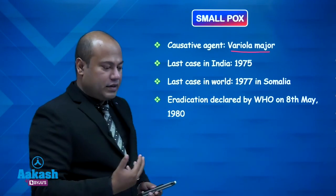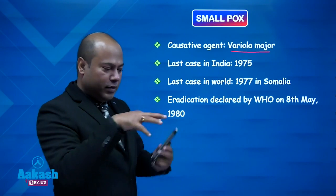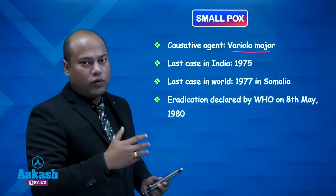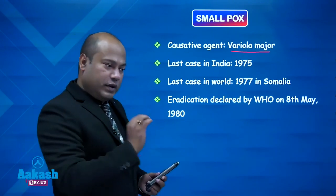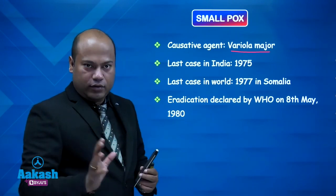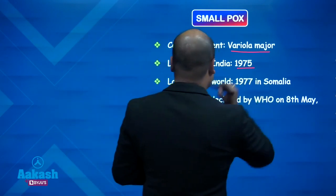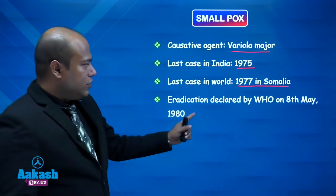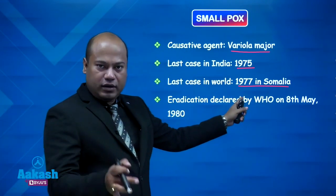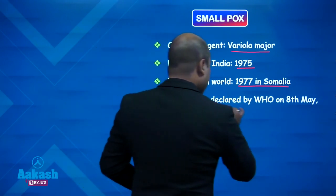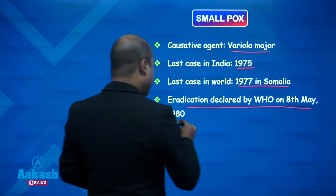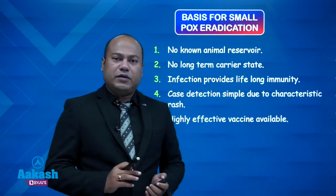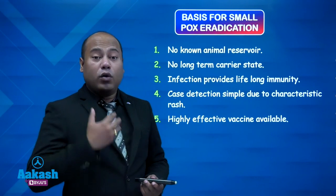The criteria for declaring a 'last case' is that after a case has occurred in a particular area or country, three years must pass with no further case anywhere. So last case in India was 1975, last case in the world was 1977 in Somalia. Eradication was declared: 1977 plus 3 equals 1980. WHO declared eradication on the 8th of May 1980.